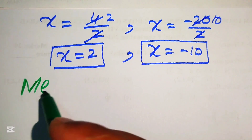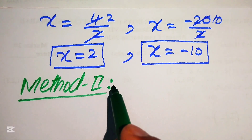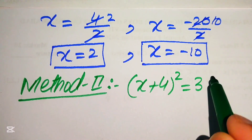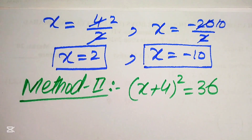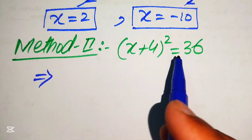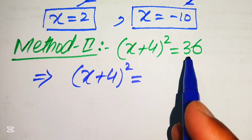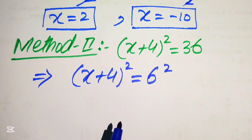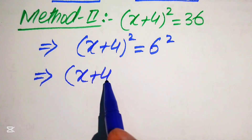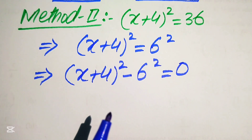Now we move to the second method. The given equation is (x + 4)² = 36. In Method 2, we focus on the right-hand side and write 36 as 6². Moving 6² to the left gives us (x + 4)² − 6² = 0.